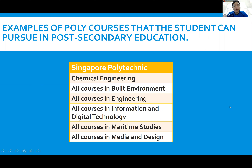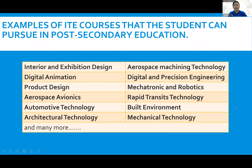D&T is accepted as a required subject in many polytechnic courses. Looking at Singapore Polytechnic as an example, courses like chemical engineering, all courses in built environment, engineering, information and digital technology, maritime studies, and media and design accept D&T as one of the required subjects. This information can be found readily on all poly websites. For N-level students, there are also courses that accept D&T as a required subject.